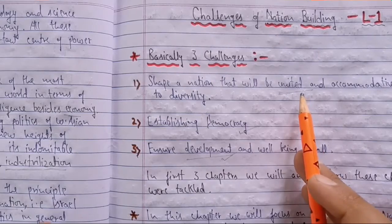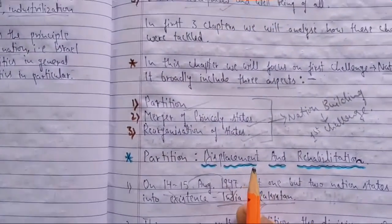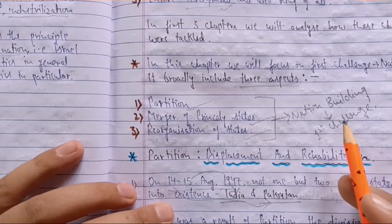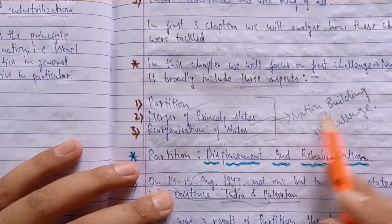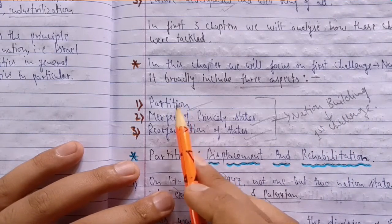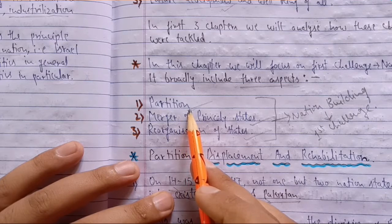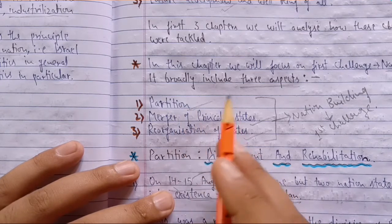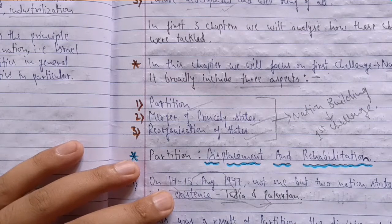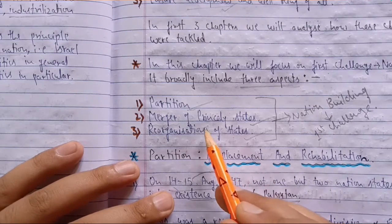We are handling the first challenge - nation building, unity and integration of the Indian state or Indian union. Under nation building, we were doing three topics: partition, displacement, and then the process of partition. In the last video I told you about the consequences of partition in detail, reading from the NCERT book, and I had given you an assignment based on these topics.